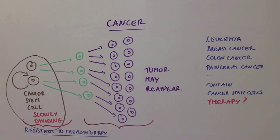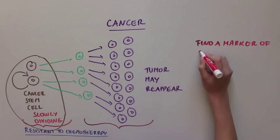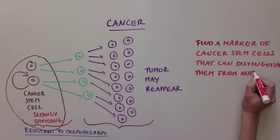The presence of these cancer stem cells in some cancers has been controversial among scientists, because they are very rare, and it is hard to distinguish them from normal stem cells. So scientists have been looking for a marker of cancer stem cells that would distinguish them from normal stem cells, which we want to keep around.